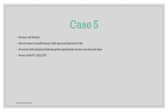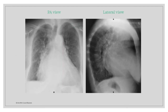Our last case is about an 82-year-old woman. She arrives with complaints of dyspnea that has gotten progressively worse over the last few days. From before, we know that she has a known diagnosis of heart insufficiency with an ejection fraction of just 20. On the first examinations, we find that she has a fever of 38.5 degrees Celsius. A PA view and a lateral view image were taken — pause and take some time to evaluate.